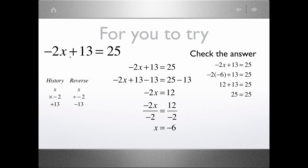For negative 2x plus 13 equals 25: the first thing is x is multiplied by negative 2, then we add 13. We subtract 13 from each side to get negative 2x equals 12, then divide each side by negative 2. Negative 2 divided by negative 2 is 1, so x equals negative 6. Checking: negative 2 times negative 6 plus 13 equals 25. Negative 2 times negative 6 is 12, and 12 plus 13 equals 25. Our answer is correct.